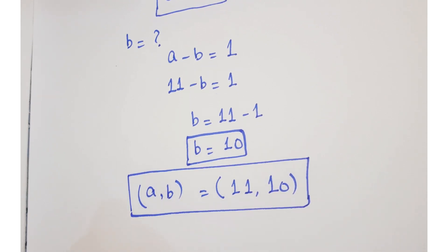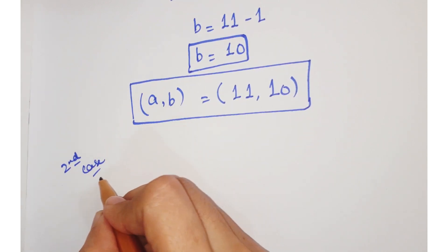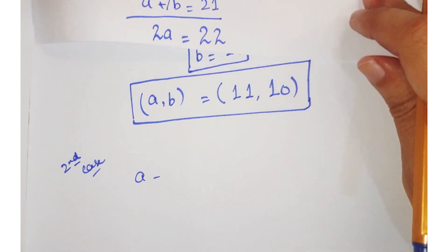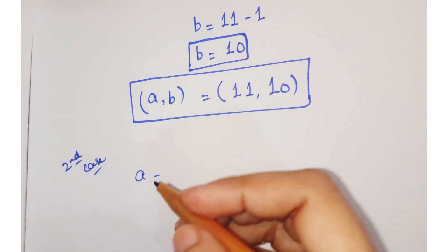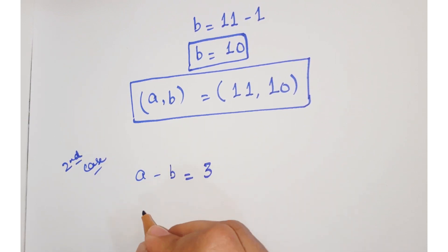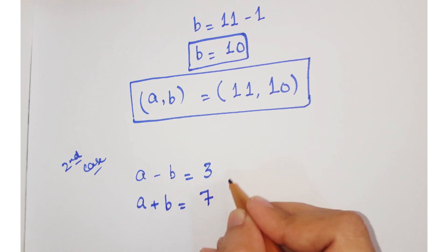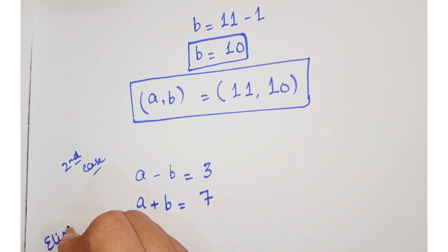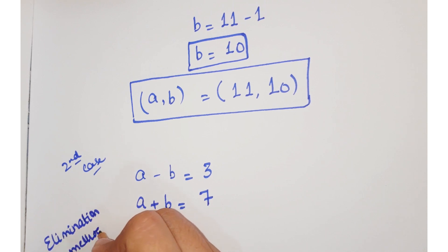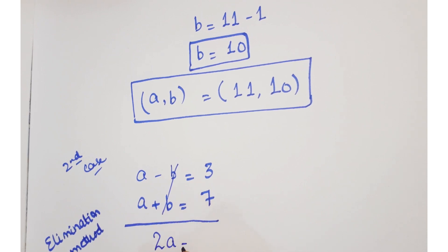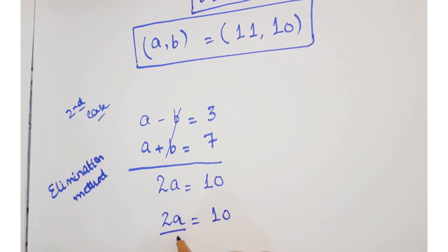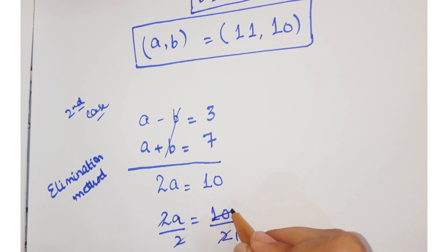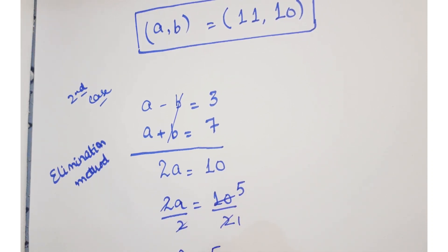Now we have a second case. In the second case, we have a minus b equals 3 and a plus b equals 7. We are going to solve this system by applying the elimination method on these two linear equations. Adding them, we get 2a equals 10. Dividing by 2 on both sides, we get a equals 5.